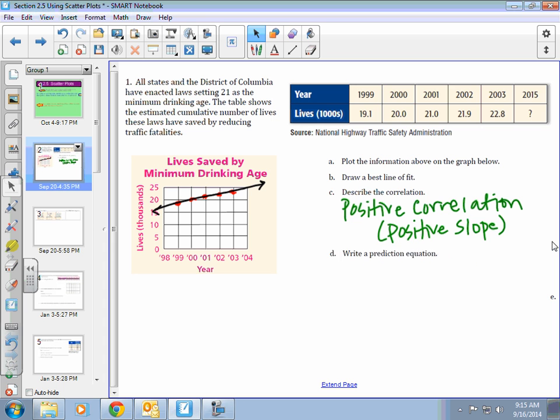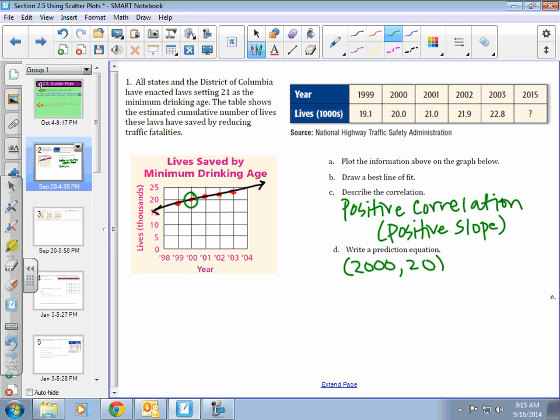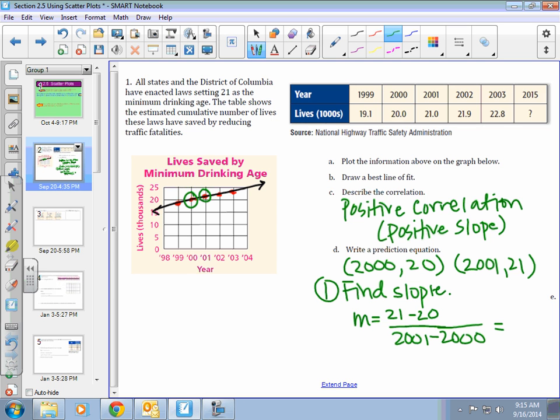Part D says write a predicted equation. What we need to do is pick two ordered pairs that our line goes through, and write an equation for it. I am going to use 2020. I have that ordered pair. And then, I am also going to use 2001 and 21, because it goes through there. The first thing we need to do is find slope. Y2 minus Y1 all over X2 minus X1. If you do that, you will get 1 over 1. So, my slope is 1.